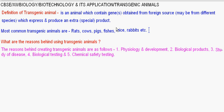Physiology and development — how physiology and development is connected to the production of transgenic animals. Transgenic animals can be used to study gene regulation in different living beings.